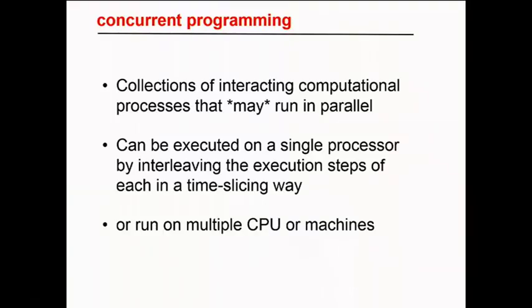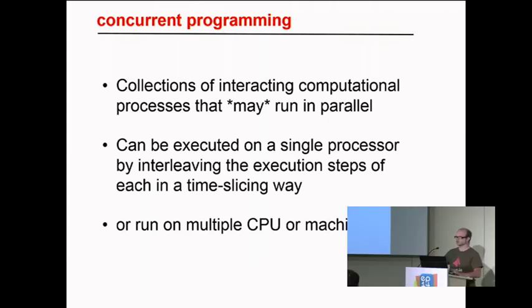So first, what is concurrent programming? Basically, concurrent programming is a way to run functions simultaneously, but it doesn't mean formally in parallel — it doesn't have to be in parallel. It could be just running multiple functions that execute code simultaneously by sharing your process in multiple time slices. Or you can run it on multiple CPUs or machines, and then it can be run in parallel.